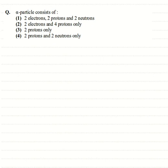In this question we are asked what an alpha particle consists of. It's a straightforward question from radioactivity and nuclei. Alpha particles are basically helium nuclei.